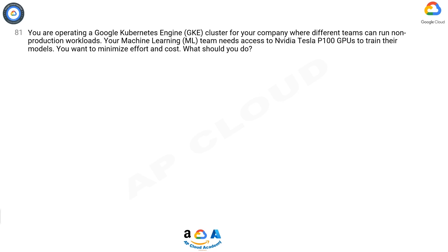You are operating a Google Kubernetes Engine (GKE) cluster for your company where different teams can run non-production workloads. Your machine learning (ML) team needs access to NVIDIA Tesla P100 GPUs to train their models. You want to minimize effort and cost. What should you do?